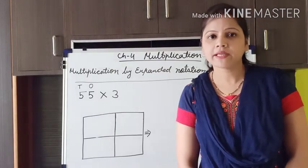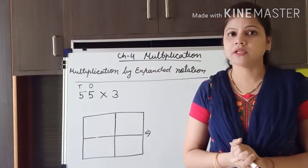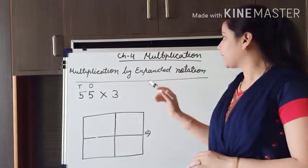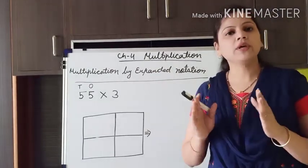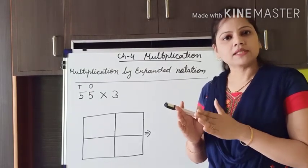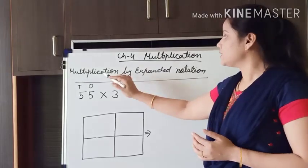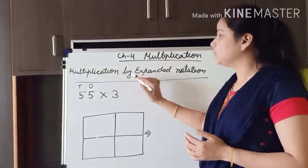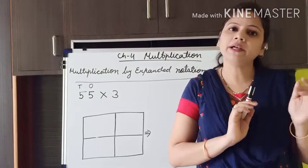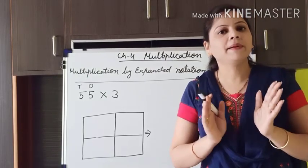What do you mean by expanded notation? I already have described it in chapter number 1 and 2. Expanded notation means we have to break the numbers by different places — we will do the multiplication by breaking the number into different places, by their place value.